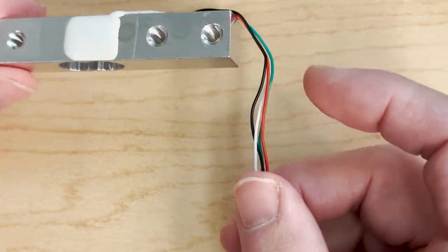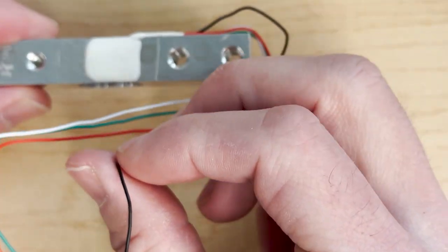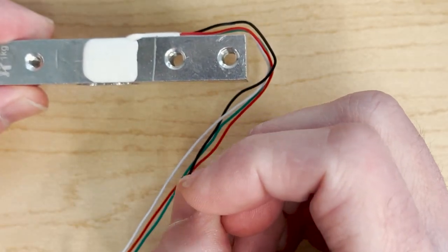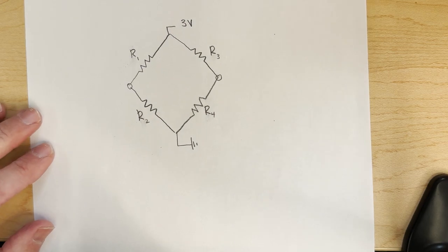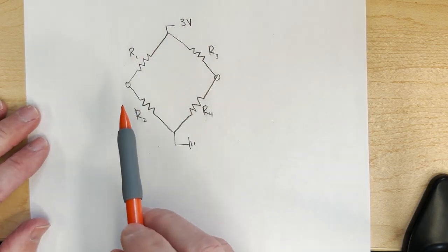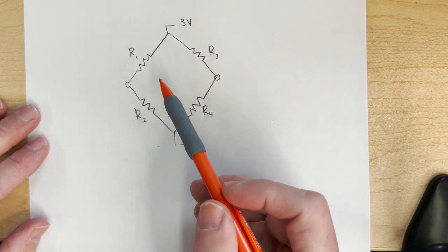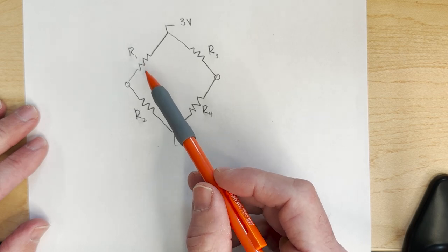This is the load cell you'll be using, and there are four wires coming off this load cell. To show the schematic of the load cell, we actually have four strain gauges denoted by the resistors here.